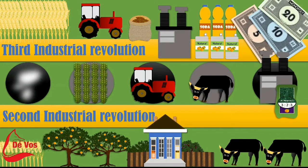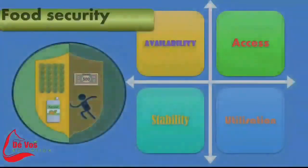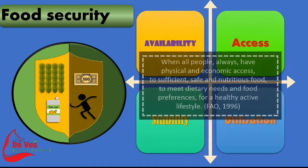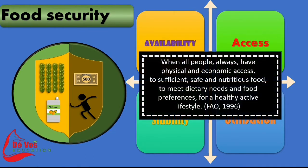The green revolution increased food production. The four pillars of food security are availability, access, stability, and utility. Food security is when all people at all times have physical and economic access to sufficient, safe, and nutritious food to meet dietary needs and food preferences for a healthy active lifestyle.